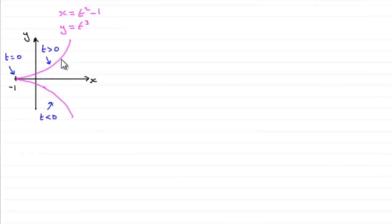I've sketched the graph for you. When t = 0, you get x = -1 and y = 0, giving this point here. As you use values of t greater than 0, you create this branch, and when you take values of t less than 0, you get this part of the curve.